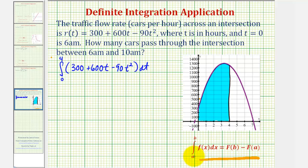So the anti-derivative of 300 would be 300 times t, plus the anti-derivative of 600t would be 600 times t, this is t to the first, so it would be t to the second divided by two, and then minus 90 times the anti-derivative of t to the second, which would be t to the third divided by three.